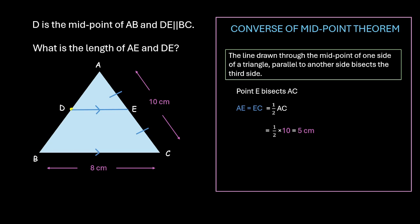Also, according to this converse theorem, we have established that E is also the midpoint now. So, if there are two midpoints, D and E of AB and AC respectively, according to the midpoint theorem, DE is half of BC as well. So, DE will be half of 8 centimeters, that is 4 centimeters.